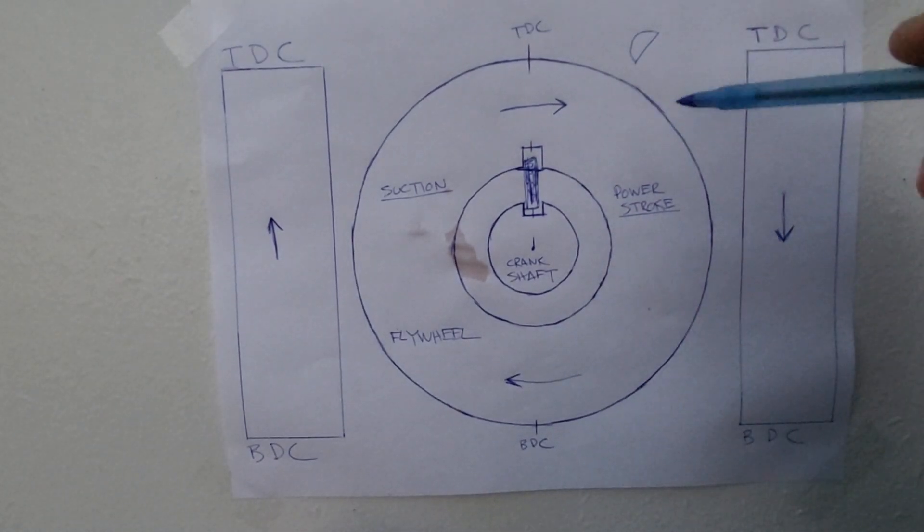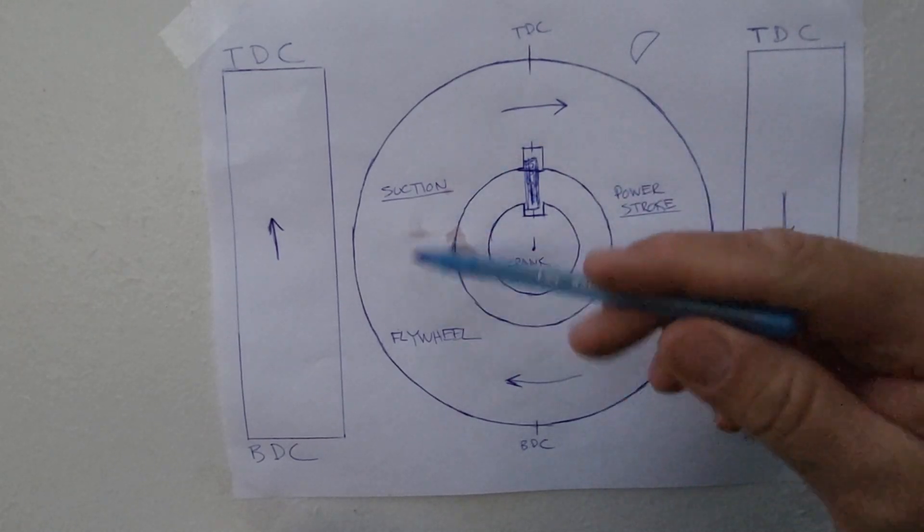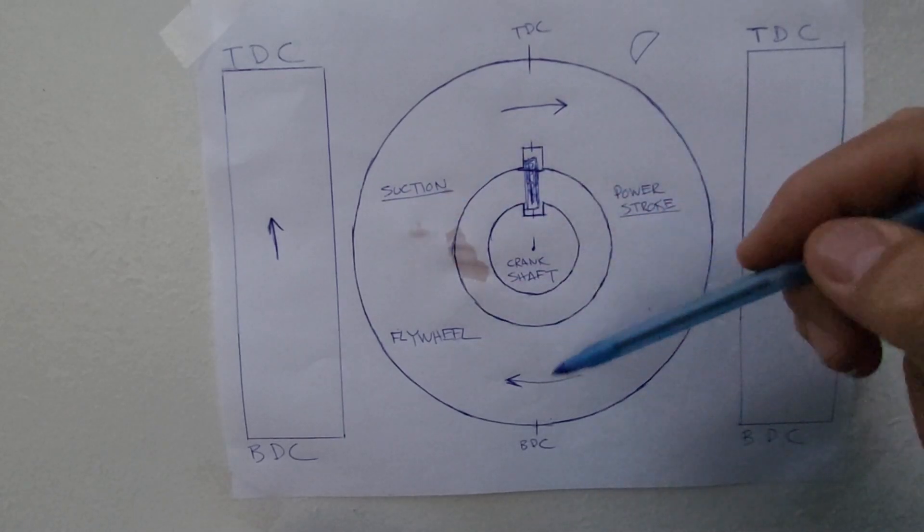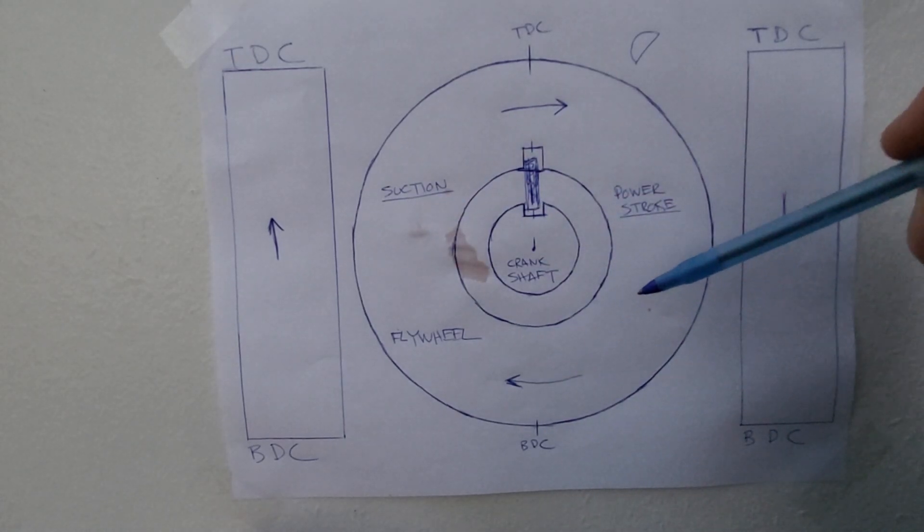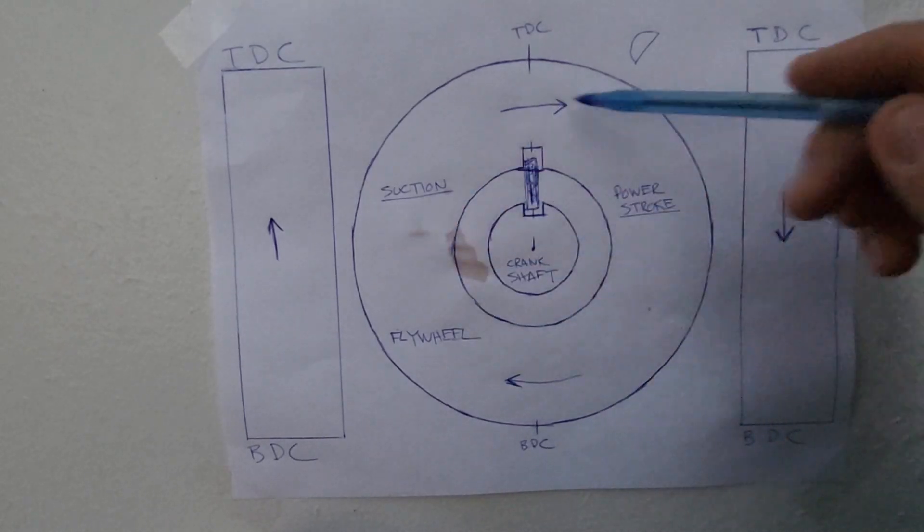Now we're going to talk about power stroke, which is on this flywheel, the direction of the turning when you're rewinding your small engine, whether it's a weed whacker or a blower, a generator or whatever. Let's just say this is the direction that it is turning.